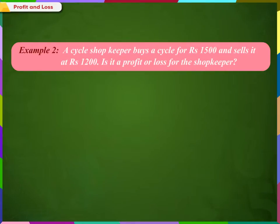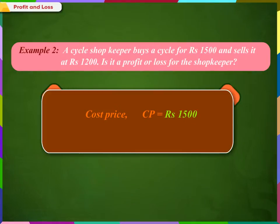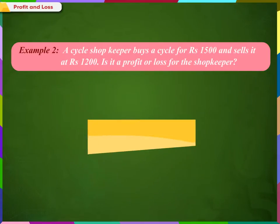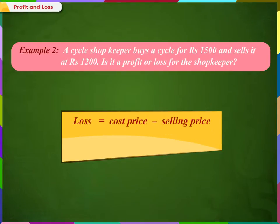Let us look at the next example. A cycle shopkeeper buys a cycle for Rs. 1500 and sells it at Rs. 1200. Is it a profit or loss for the shopkeeper? Here, the cost price is Rs. 1500 and selling price is Rs. 1200. Since the selling price is lower than the cost price, we can say it is a loss. And how much is the loss? Loss is equal to cost price minus the selling price, that is, Rs. 1500 minus Rs. 1200, which equals Rs. 300. A loss of Rs. 300 means the article was sold at Rs. 300 less than the cost price.